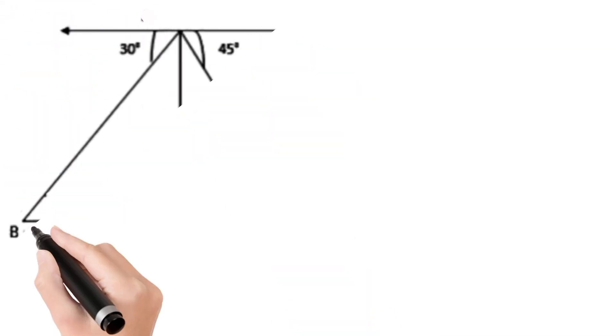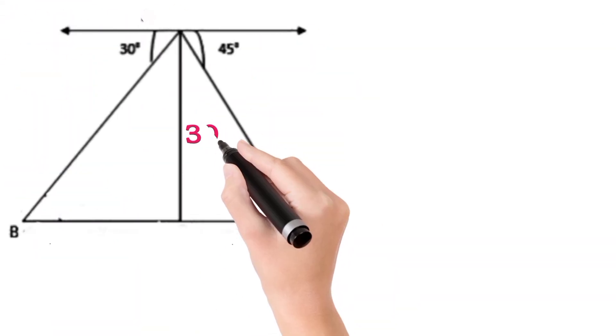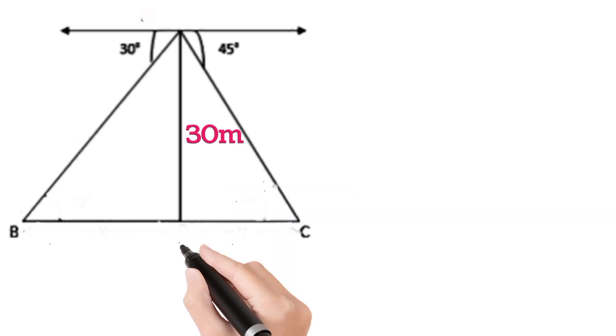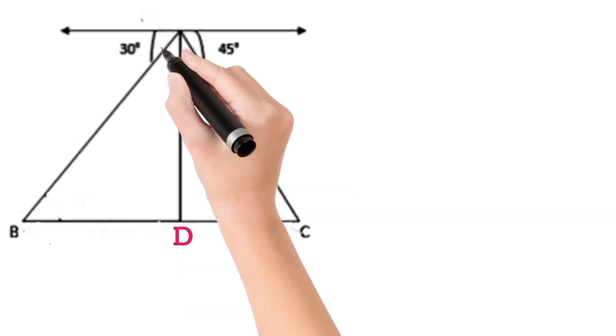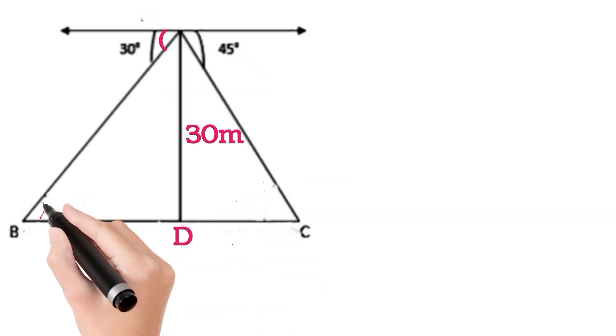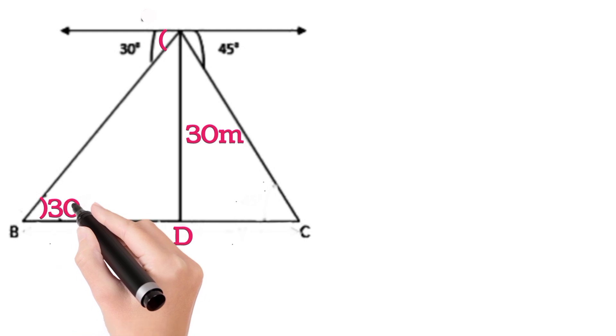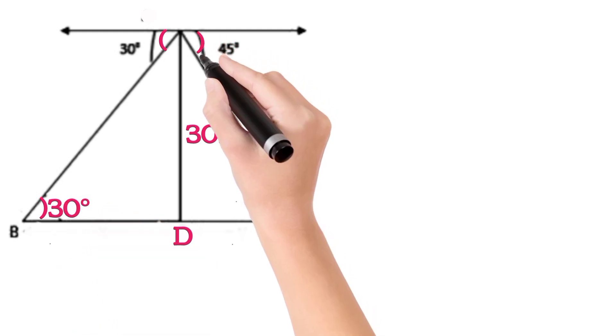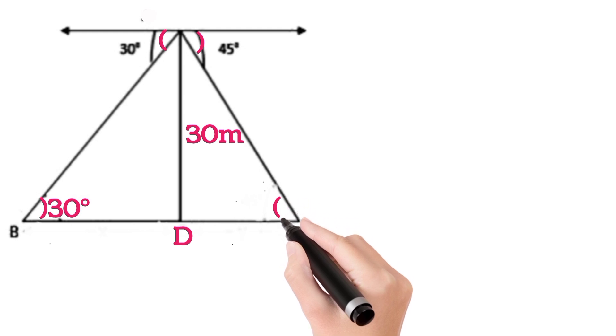So let us draw the figure again. Now this is given 30 meters. Let us assume this point is D. Now angle of depression is 30 degrees, so this angle will also be 30 degrees. This angle of depression is 45 degrees, so this angle will be 45 degrees.